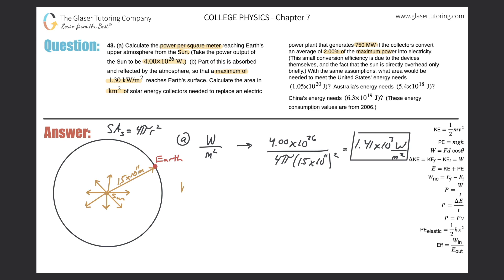So there are a lot of conversions. This would probably be best represented as a dimensional analysis problem. First, identify what we're looking to calculate — it says calculate the area in kilometers squared. So my ending unit is going to be kilometers squared. The job is to set up some conversion factors.